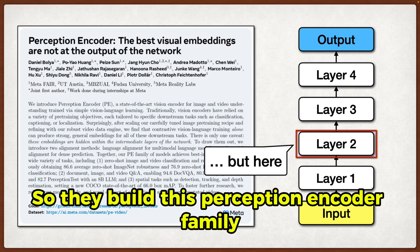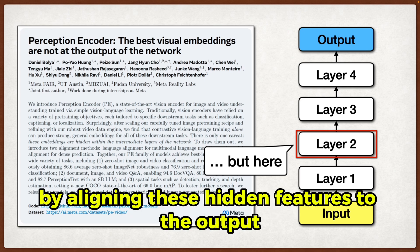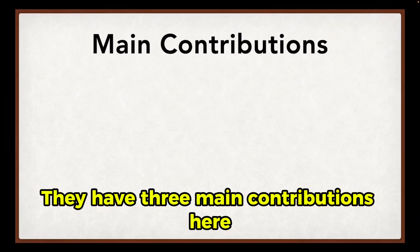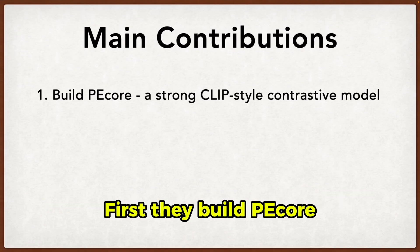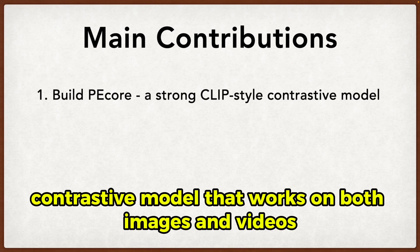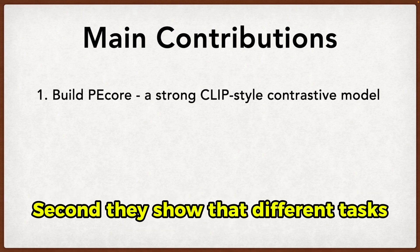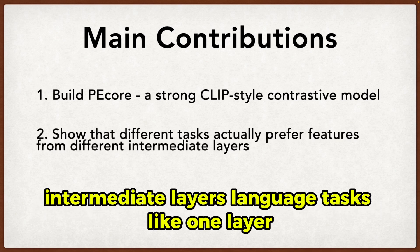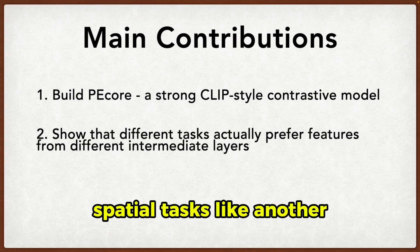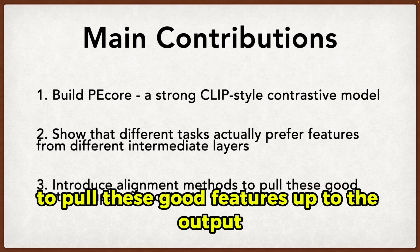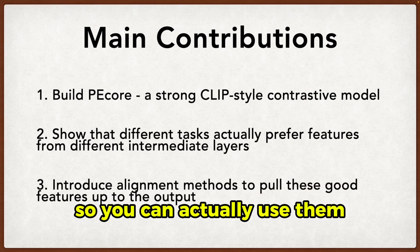They build this Perception Encoder family that tries to fix this by aligning these hidden features to the output. They have three main contributions. First, they build PeCore, which is basically a really strong CLIP-style contrastive model that works on both images and videos. Second, they show that different tasks actually prefer features from different intermediate layers — language tasks like one layer, spatial tasks like another. Third, they introduce alignment methods to pull these good features up to the output so you can actually use them.